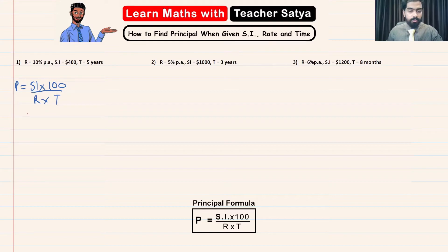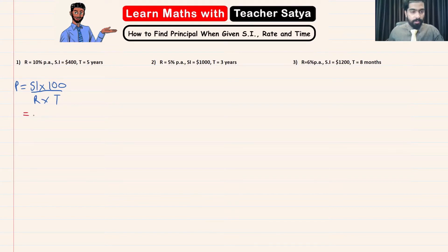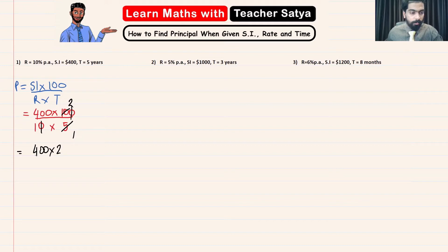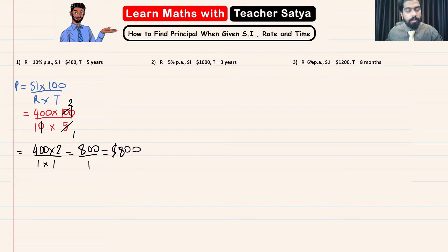We will be using this formula to solve all three questions. In question number one, our SI is 400, multiplied by 100, divided by the rate of 10% multiplied by the time of five years. Now let's simplify: the two zeros cancel, and 10 and 5 simplify — 5 becomes 1 and 10 becomes 2. So we have 400 multiplied by 2 over 1 times 1, which equals 800 over 1, which is $800. So the principal in question number one is $800.